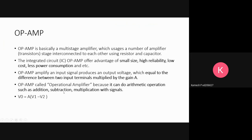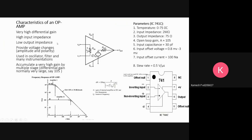The characteristics of op-amp: it has very high differential gain—the A value is very large—high input impedance RIN is very high, ROUT is very low, low output impedance. It provides voltage change amplitude and polarity changes, and is used in oscillators, filters, and many instrument calculations.